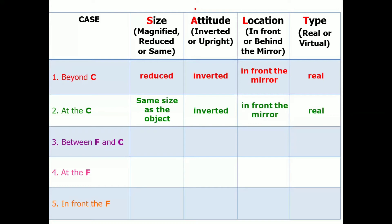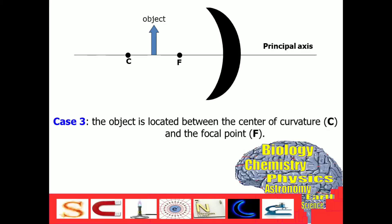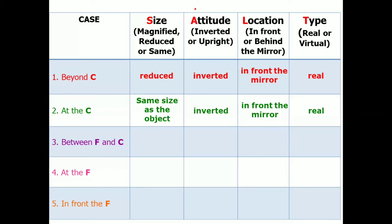How about case number three? Between F and C. And this will be the result of case number three. The image is formed behind C. Let's describe its characteristics.